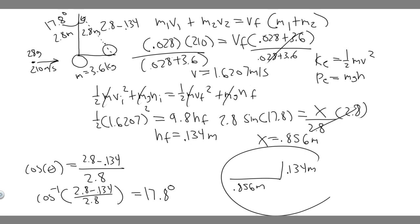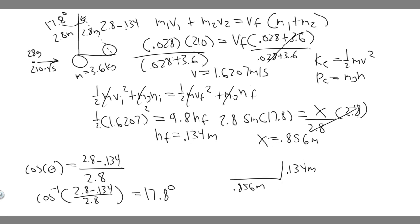So these are your answers: the vertical component is 0.134 meters and the horizontal component is 0.856 meters. Hopefully you found this useful.